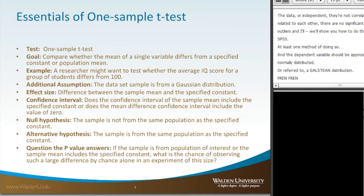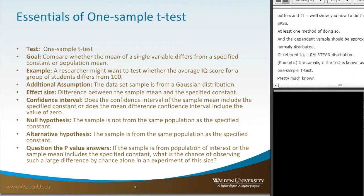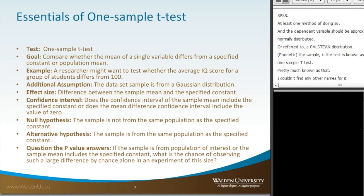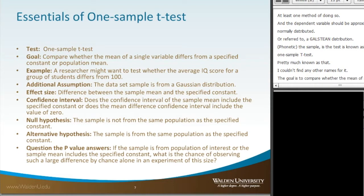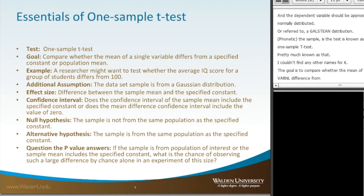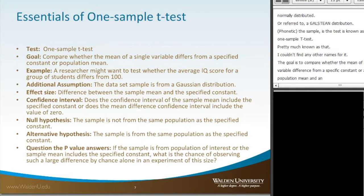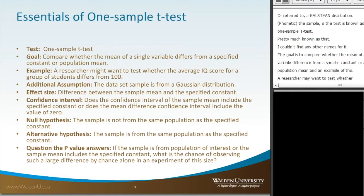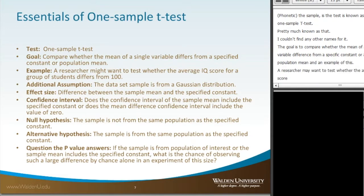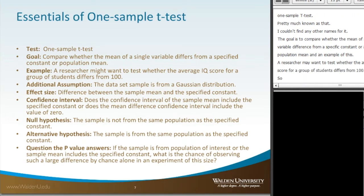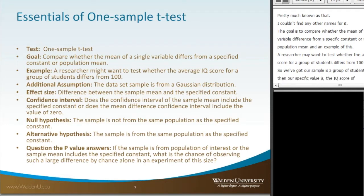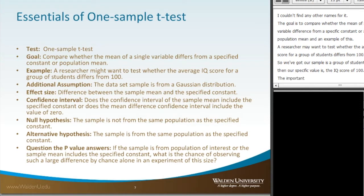The test is known as the one-sample t-test. The goal is to compare whether the mean of a single variable differs from a specific constant or population mean. For example, a researcher may want to test whether the average IQ score for a group of students differs from 100 — the sample is the group of students and the specific value is the IQ score of 100. An important assumption is that the dataset sample is from the Gaussian distribution.